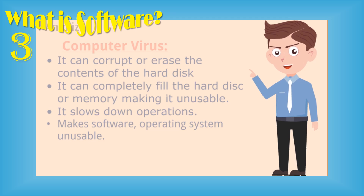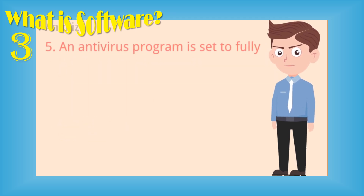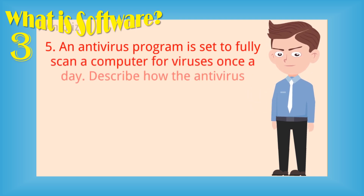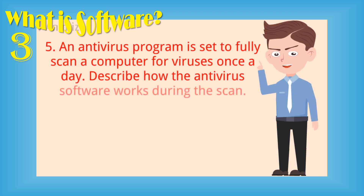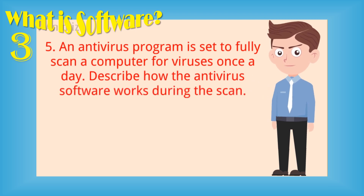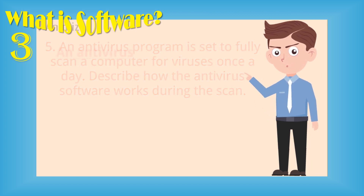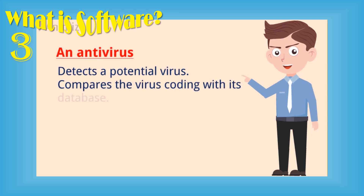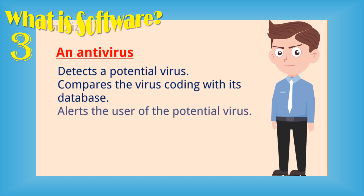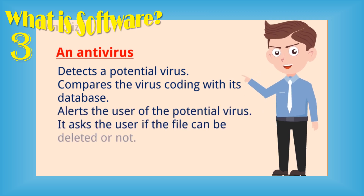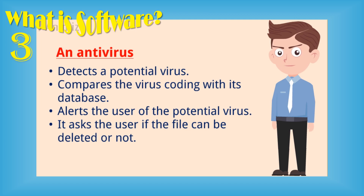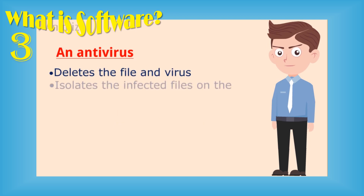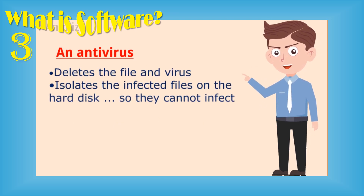Question number five: an antivirus program is set to fully scan a computer for viruses once a day. Describe how the antivirus software works during the scan. An antivirus detects a potential virus, compares the virus code with its database, then alerts the user of the potential virus. It asks the user if the file should be deleted. The antivirus then deletes the file and virus, or isolates the infected files on the hard disk so they cannot infect the computer. It also disinfects or cleans the file.